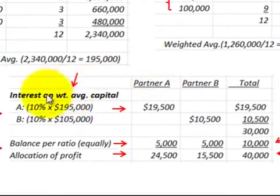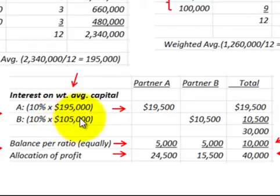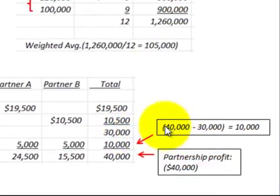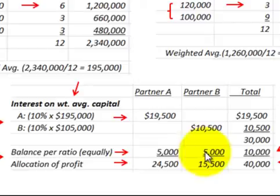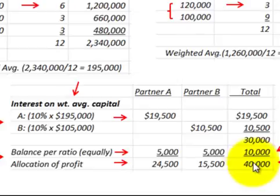Using the weighted average capital, at 10% interest: partner A's $195,000 gives $19,500, and partner B's $105,000 gives $10,500, for a total of $30,000 allocated. The $40,000 profit less the $30,000 already allocated leaves $10,000 to allocate. Using the 50/50 ratio, each partner gets $5,000, giving a total of $40,000 allocated. Partner A received $24,500 total and partner B received $15,500 total for the year.